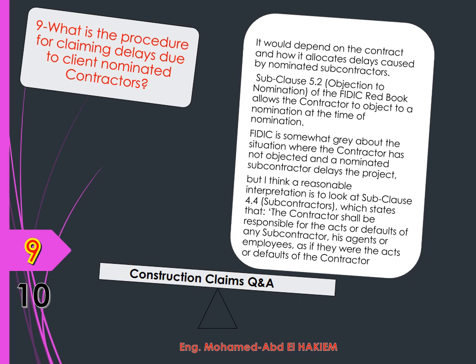FIDIC is somewhat grey about the situation where the contractor has not objected and a nominated subcontractor delays the project. However, a reasonable interpretation is to look at sub-clause 4 for Subcontractors, which states that the contractor shall be responsible for the acts or defaults of any subcontractor, his agents or employees, as if they were the acts or defaults of the contractor. This does not exclude nominated subcontractors, so would not allow the contractor to claim against the employer. The correct recourse would be to claim against the subcontractor for losses or costs incurred due to the subcontractor's delay.